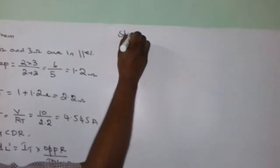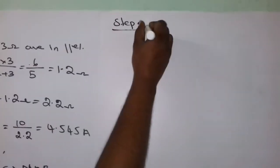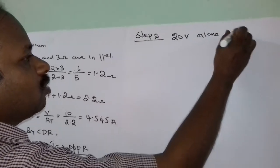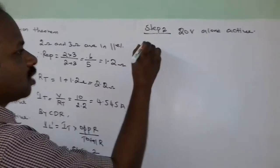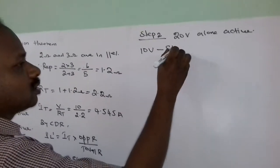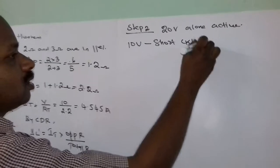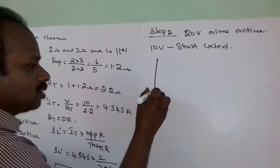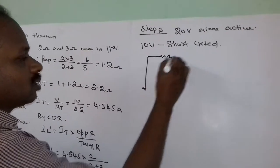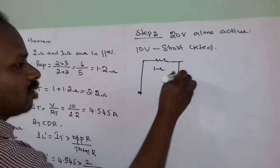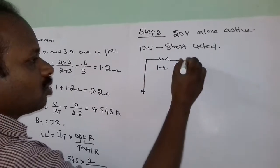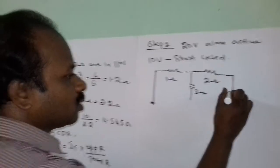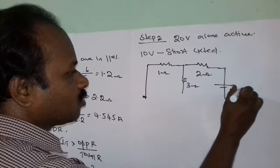We go for step 2. In step 2, we consider 20V alone active. That means this 10V is short-circuited. We make a short circuit in the place of this 10V. The remaining circuit is drawn — the 3 ohm load resistor, 1 ohm resistor, 2 ohm, and the 20V source.